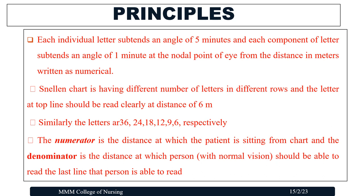The principle behind this chart is that each individual letter subtends an angle of five minutes, and each component of the letter subtends an angle of one minute at the nodal point of the eye, from the distance in meters written as a numeral. The Snellen's chart has different numbers of letters in different rows, and the top line should be read clearly at a distance of six meters. The subsequent rows correspond to distances of 36, 24, 18, 12, 9, and 6 meters respectively.